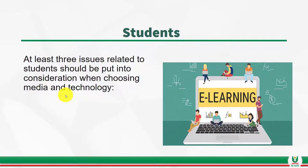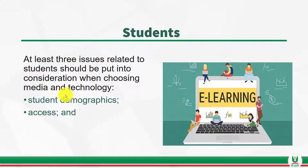The first variable is Students. You need to ensure that three issues related to students are considered when choosing media and technology. Your learners are the most important aspect of technology use. You need to understand the characteristics of the learners. The three basic issues to consider are student demographics, access, and the differences in how students learn.